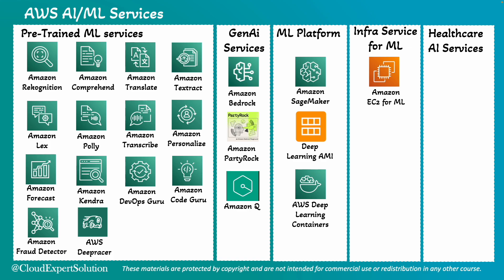Moving to infrastructure services for machine learning: Amazon EC2 instances for ML are not regular EC2 instances — they are high-performance EC2 instances optimized for machine learning workloads. You can use these to run large-scale machine learning training and inferencing. An example is the Amazon EC2 P5 instance, specifically built to train complex genomic models.